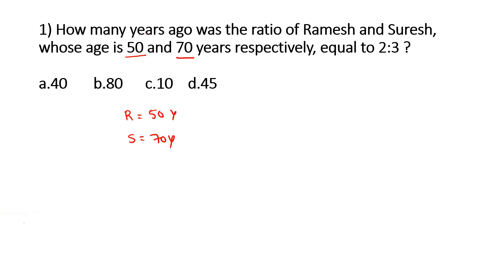They are asking how many years ago their ratio of ages was equal to 2 is to 3. That means we have to subtract a certain number of years from their current ages and find the ratio between them. Whenever we get the ratio as 2 is to 3, we select that option as our answer. Let's get started with the solution.